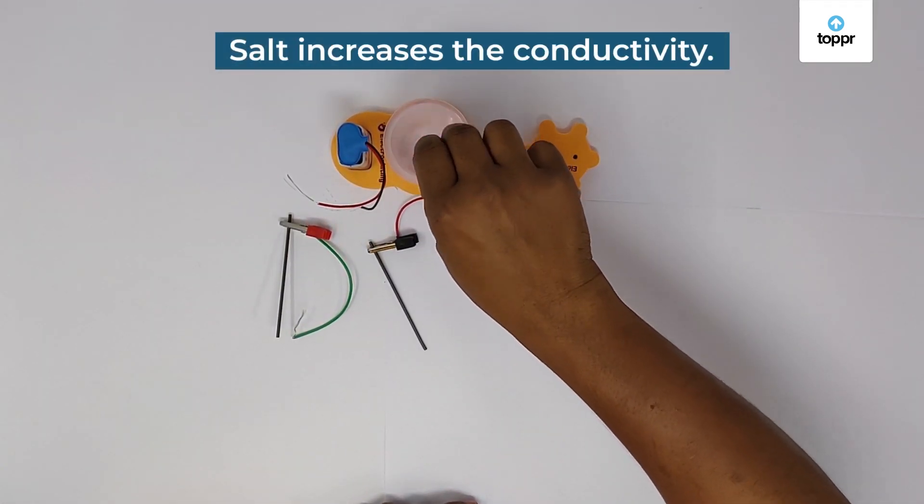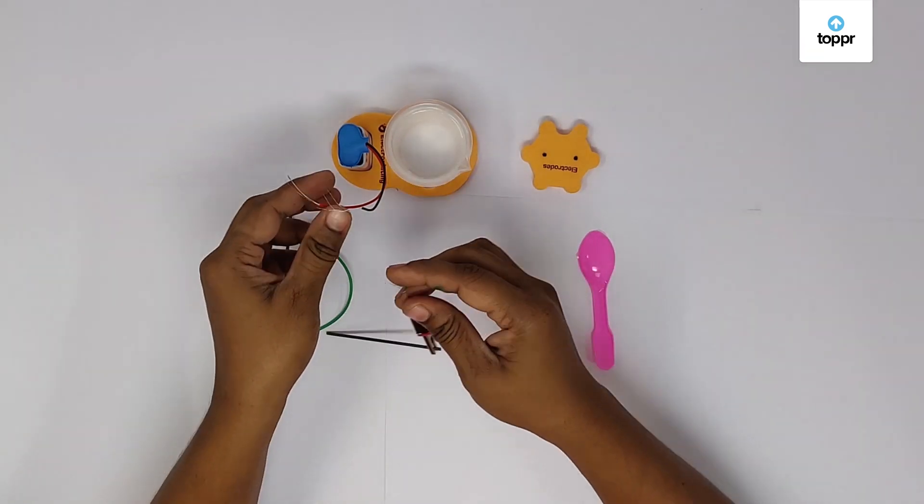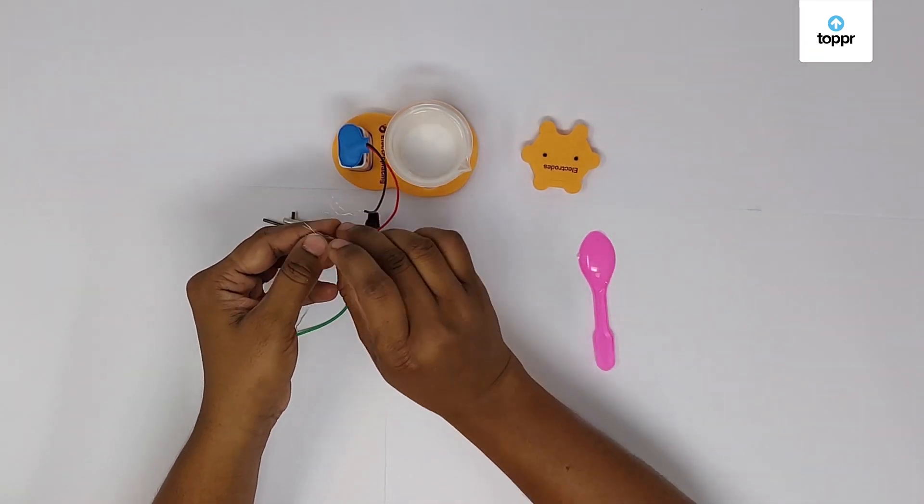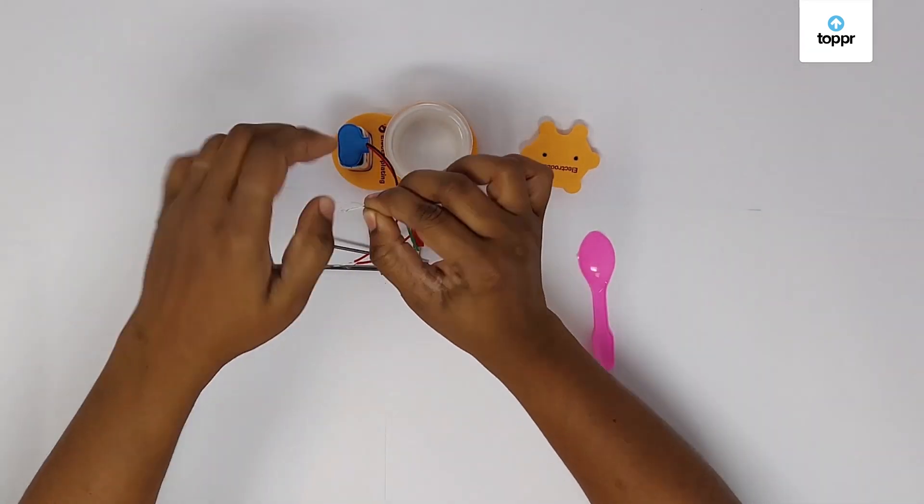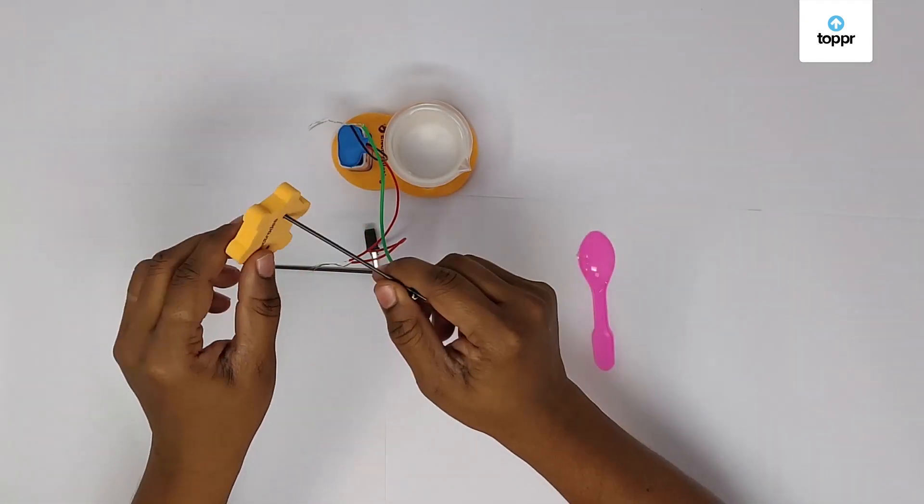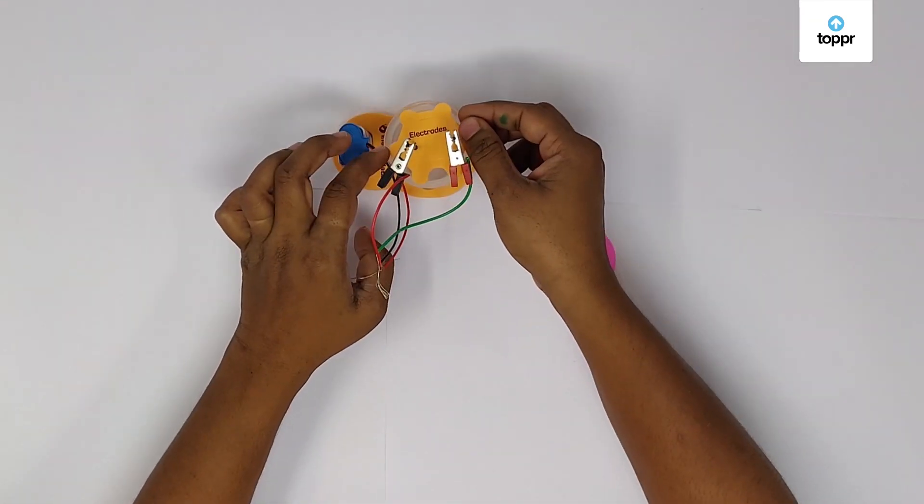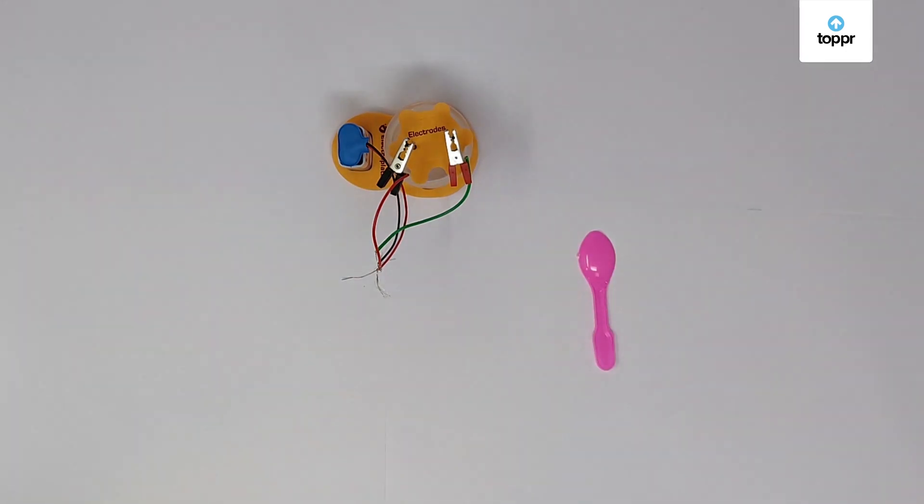Put some salt in the water to make it a good conductor. Now, connect the carbon rod to the battery with the help of wires. Put these carbon rods inside the water. We will use the stand to keep the whole setup straight.